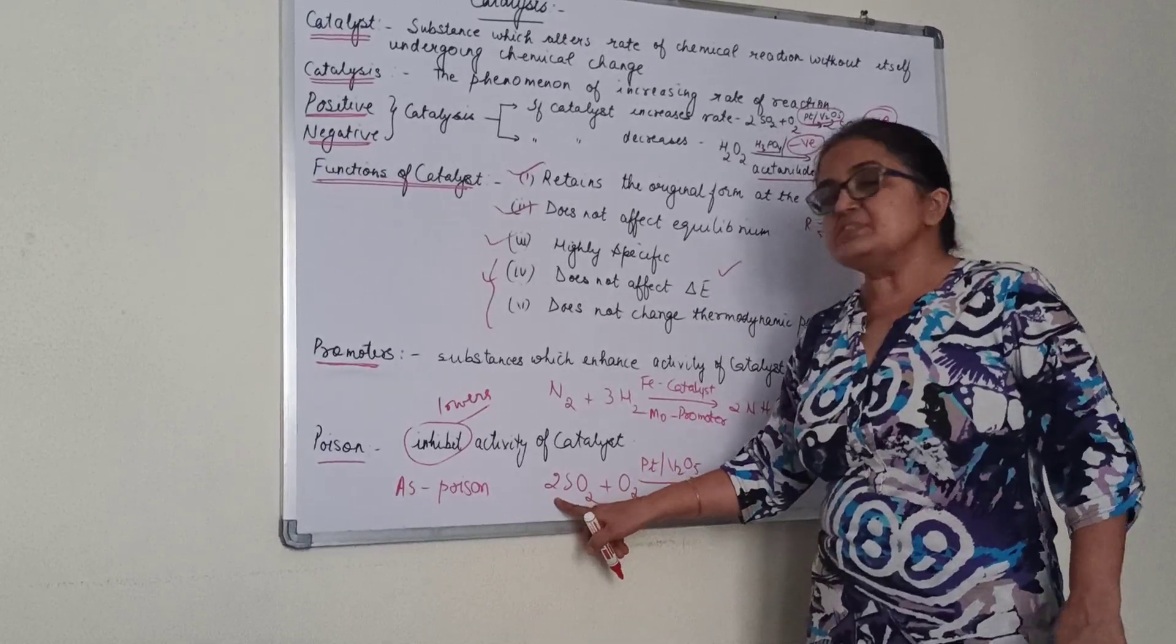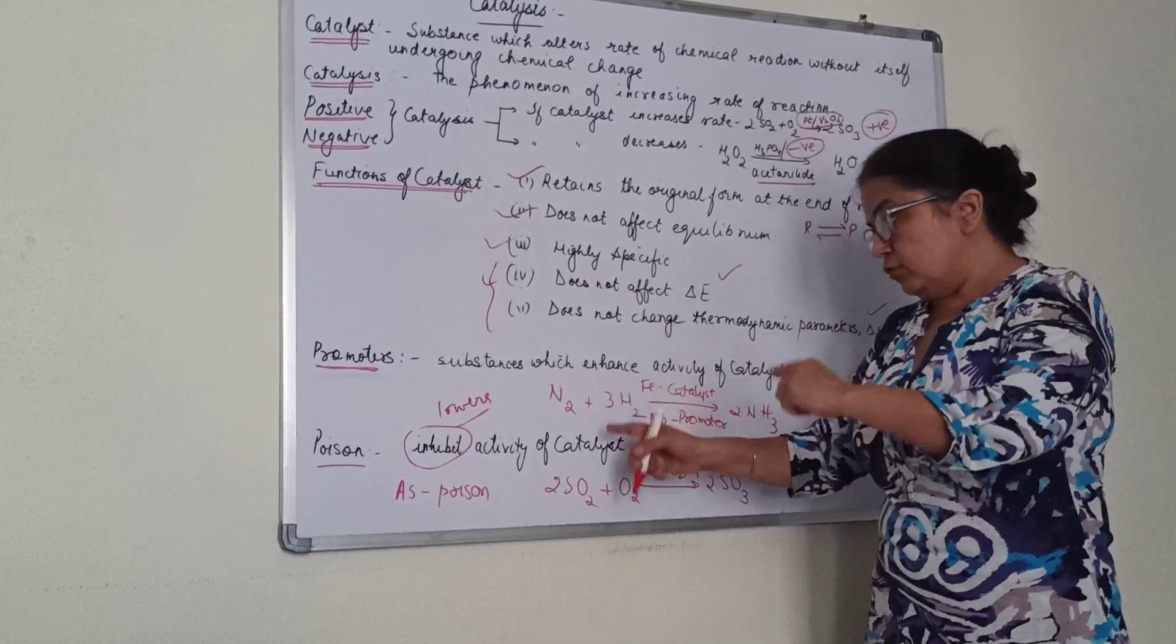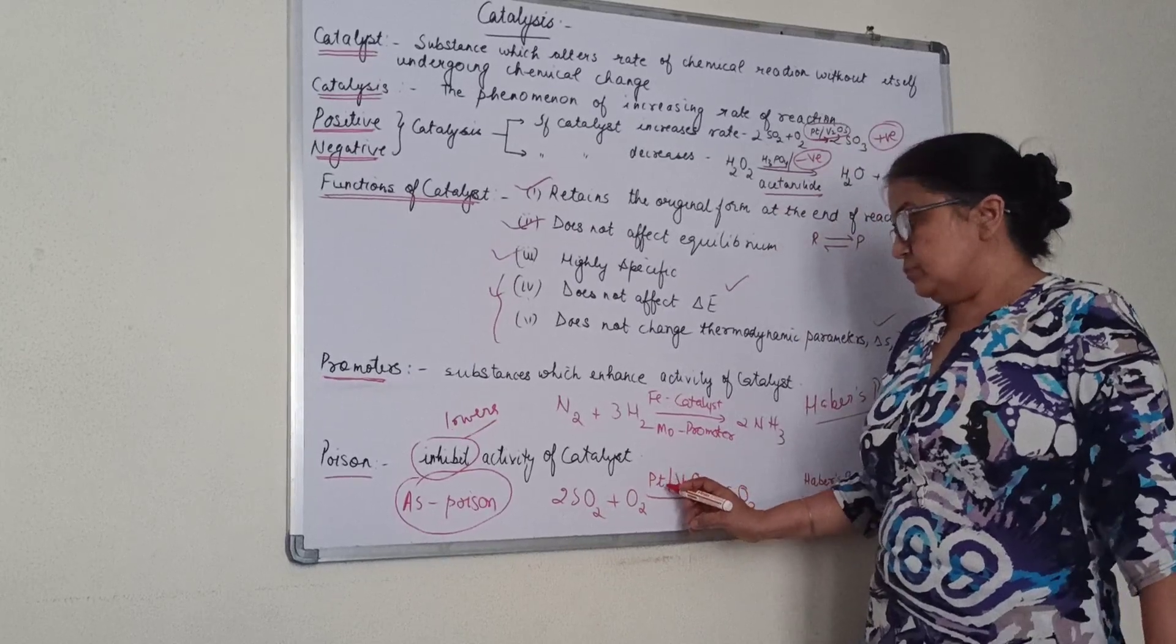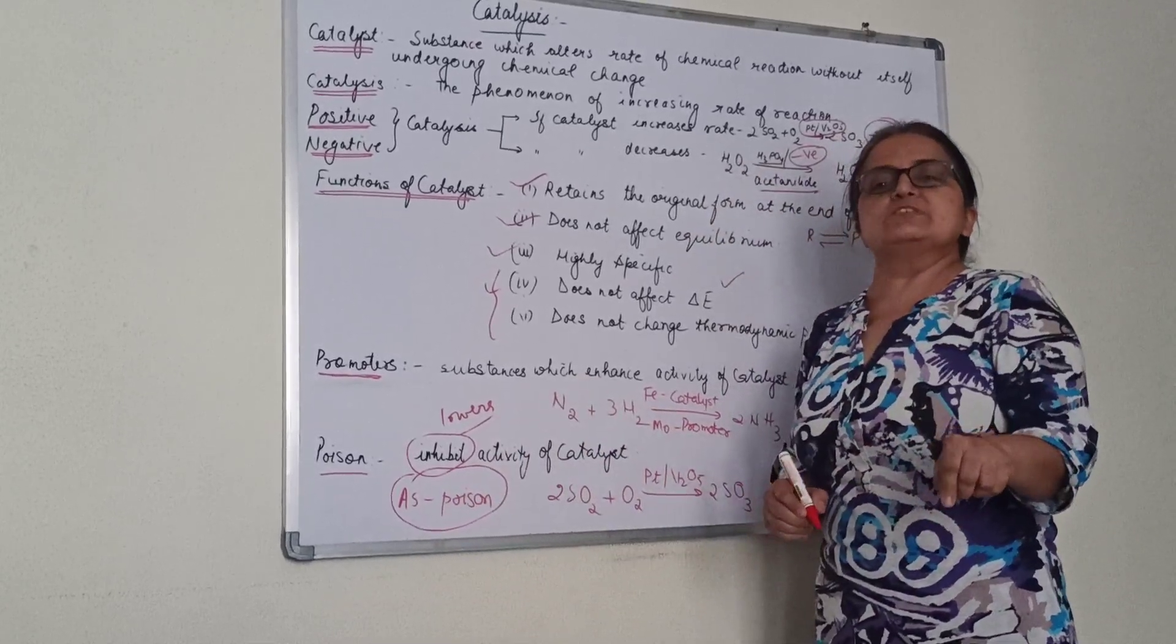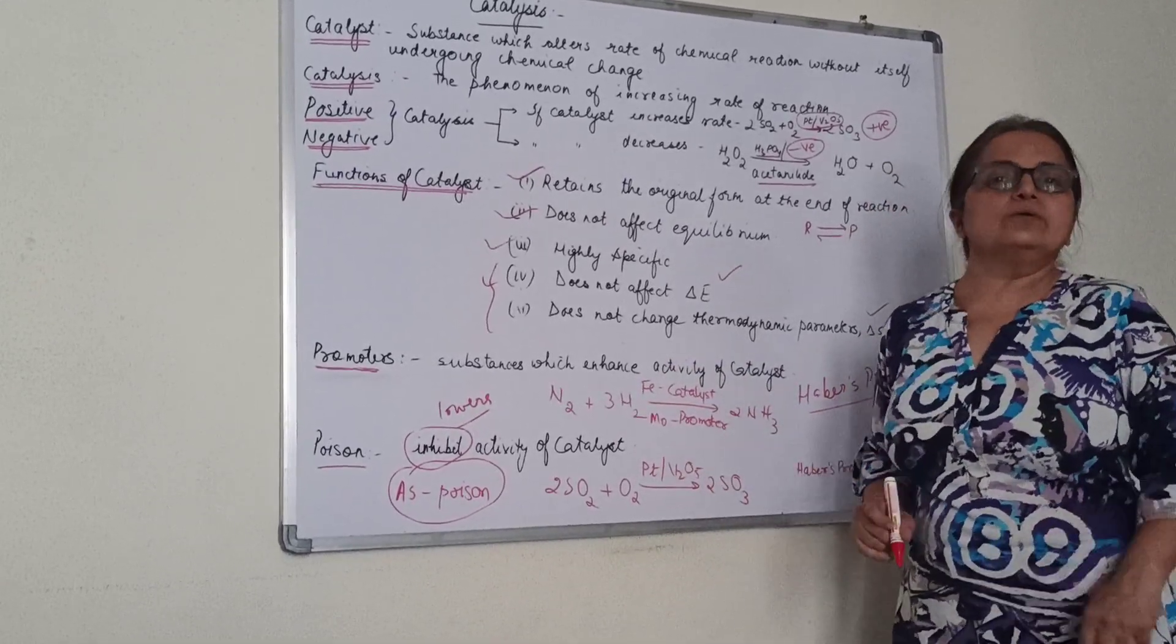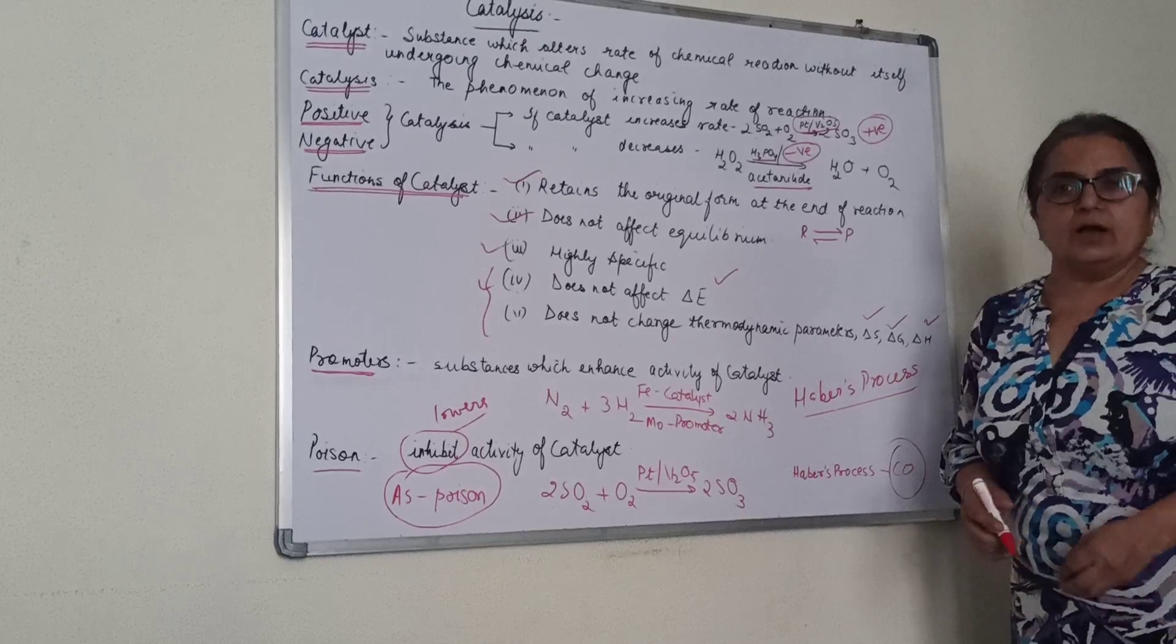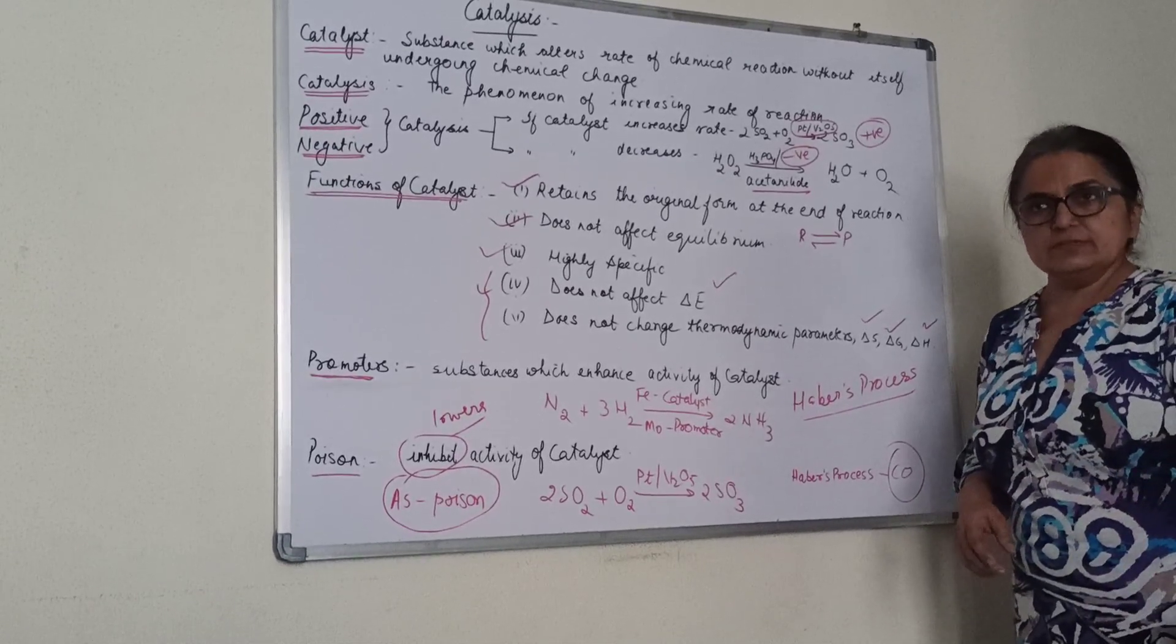When SO2 is prepared from sulfur, sulfur is always associated with arsenic impurity, which should be removed before it forms SO2 and then SO3, which forms sulfuric acid. If arsenic is present, it will poison the catalyst and prevent the reaction. Arsenic is a poison for platinum or vanadium pentoxide. Likewise, for Haber's process, carbon monoxide is a poison and should be removed before ammonia preparation. It poisons the catalyst for this reaction. Clear?